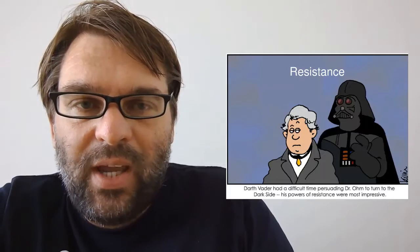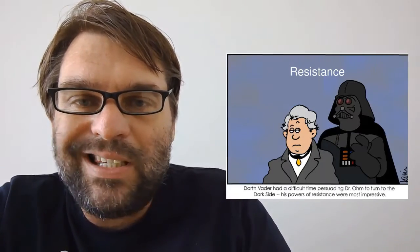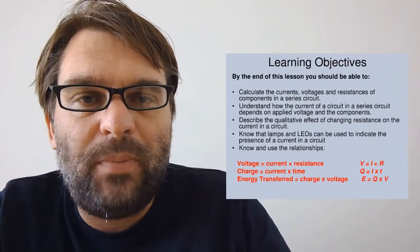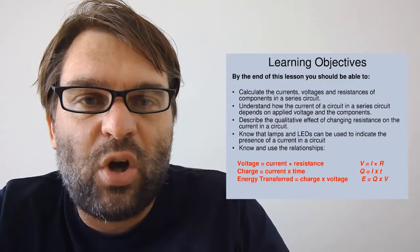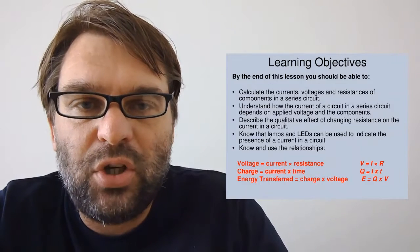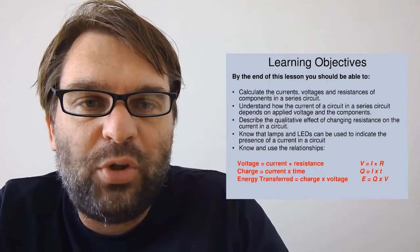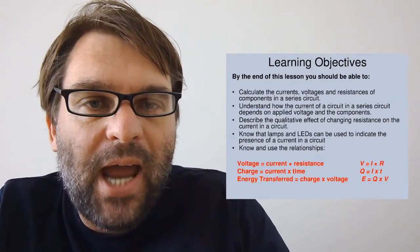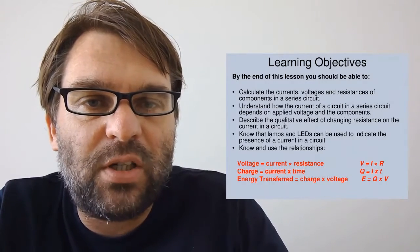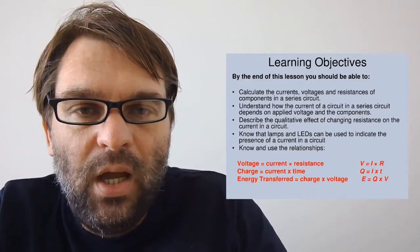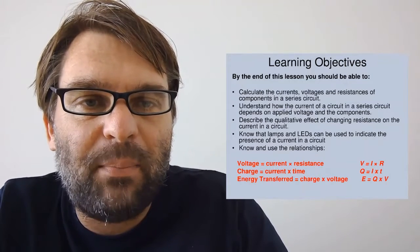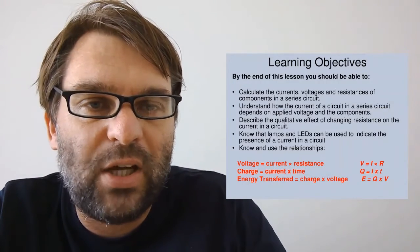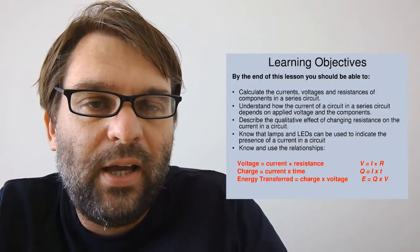In today's lesson we are looking at electrical resistance. By the end of the lesson you should be able to calculate the currents, voltages, and resistances of a component in a series circuit; understand how the voltage in a series circuit depends on the applied voltage and its components; describe the qualitative effect of changing resistance on the current in a circuit; know that lamps and LEDs can be used to indicate the presence of a current in a circuit; and finally know and use the following relationships: V = IR, Q = It (which we've already looked at), and E = QV.